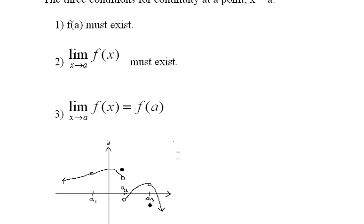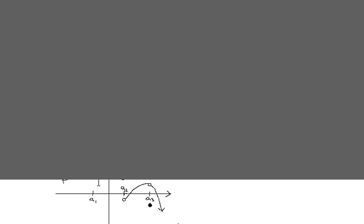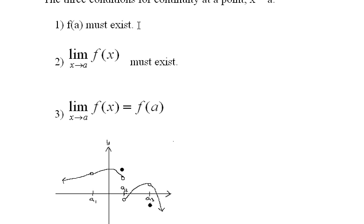And we're going to see why, according to these three conditions, why this is discontinuous at each one of these points. Well, I'll take a1 first and I notice the first thing I notice about a1 is a hole right here. Well, f of a1 does not exist. Therefore, it doesn't meet this first necessary condition. So we have a discontinuity at a1 for sure.